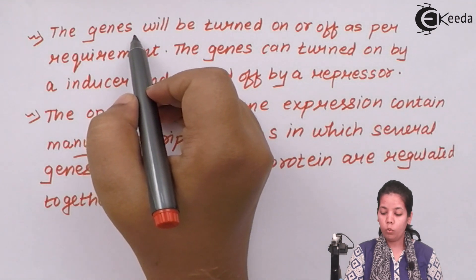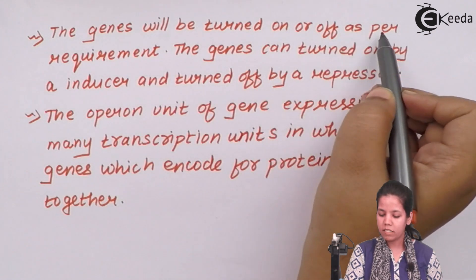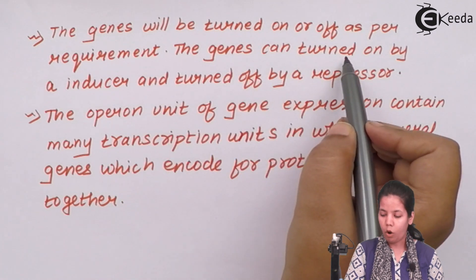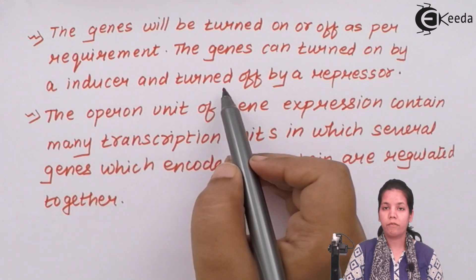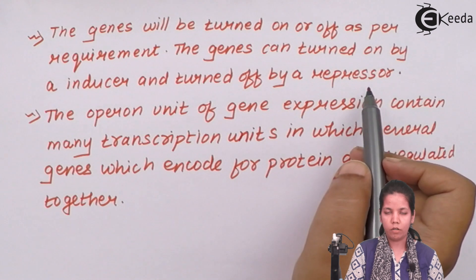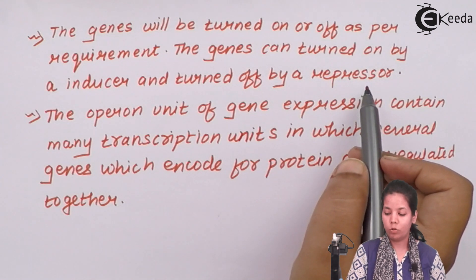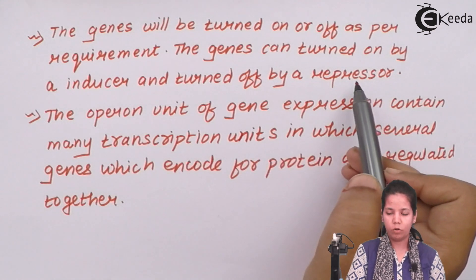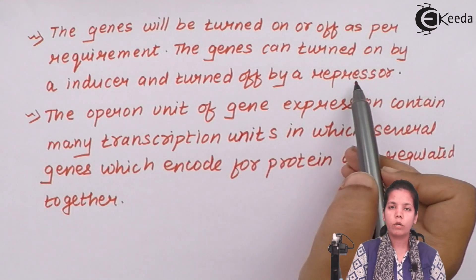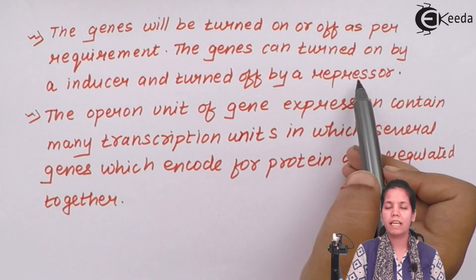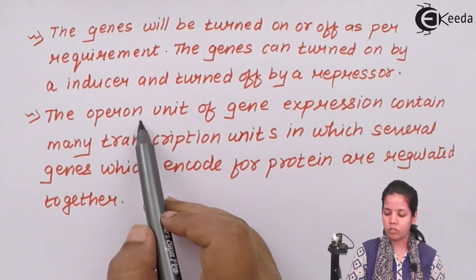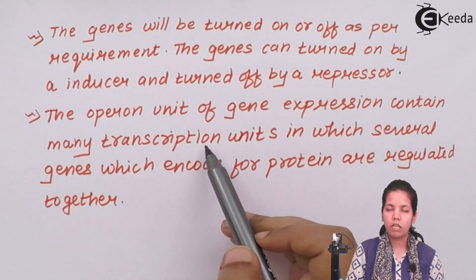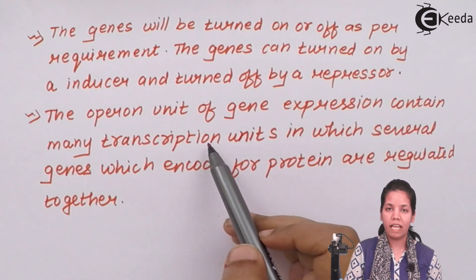The genes can be turned on or off as per the requirement. Genes can be turned on or started by an inducer molecule - a starter molecule - whereas when they have to be turned off, they can be turned off by repressor molecules. The lactose operon, or lac operon, has both an inducer molecule and a repressor molecule. Basically, the repressor molecule masks or covers the operator region so that RNA polymerase can never bind to the promoter region and form a protein. An operon or a segment of gene expression consists of many transcriptional units - units or segments that help to form protein synthesis.